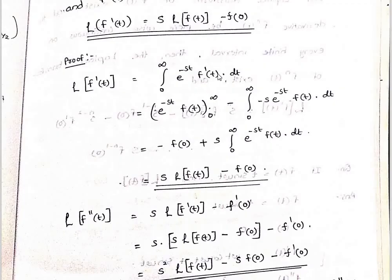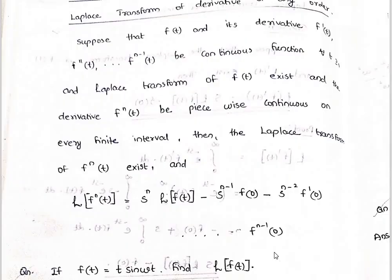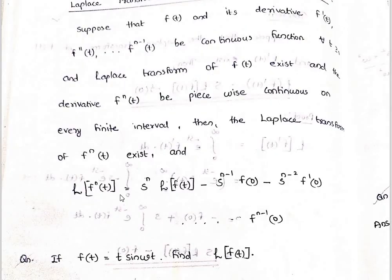Integrating by parts: minus f of 0, then s times L of f of t minus f of 0. Applying the derivative rule repeatedly, in general: L of the nth derivative of f of t equals s raised to n times L of f of t, minus s raised to n minus 1 times f of 0, minus s raised to n minus 2 times f dash of 0, minus ... minus the (n minus 1)th derivative of f at 0.